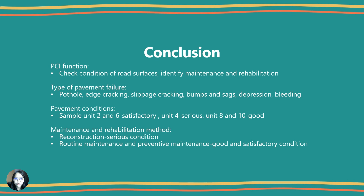In conclusion, the Pavement Condition Index is used to check the condition of road surfaces and identify maintenance and rehabilitation needs. Types of pavement failures found at this project location include potholes, edge cracking, slippage cracking, bumps and settlement, depression, and bleeding. Pavement conditions for sample units 2 and 6 are satisfactory, unit 4 is serious, and units 8 and 10 are good. The recommended maintenance method is reconstruction for serious conditions, while routine and preventive maintenance are suitable for good and satisfactory conditions.